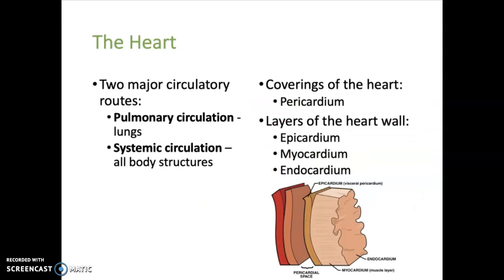The heart itself acts as a muscular pump that pumps blood through the entire body. There are two main circulatory routes. Pulmonary circulation is when blood moves from the right side of the heart to the lungs and then returns to the left side of the heart. Systemic circulation is when blood is pumped from the left side of the heart out to all body structures, and then blood is returned back to the right side of the heart.